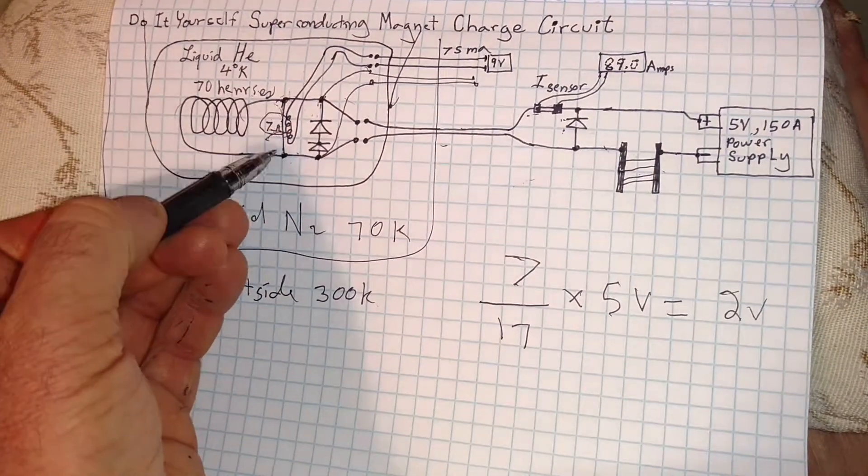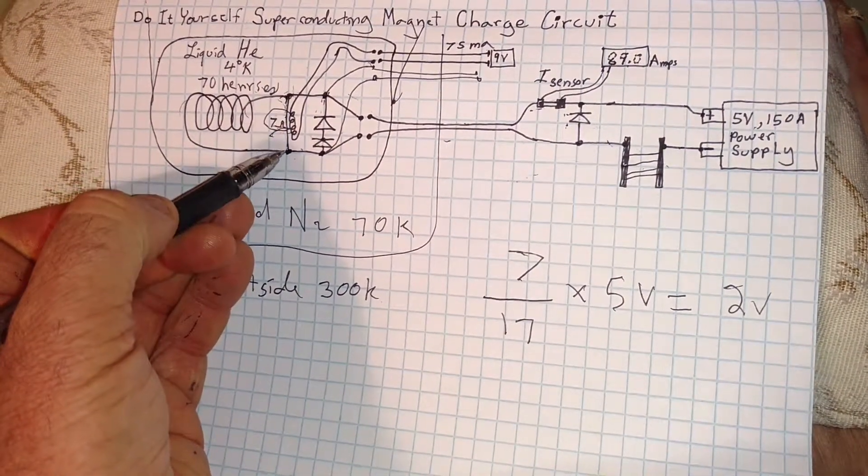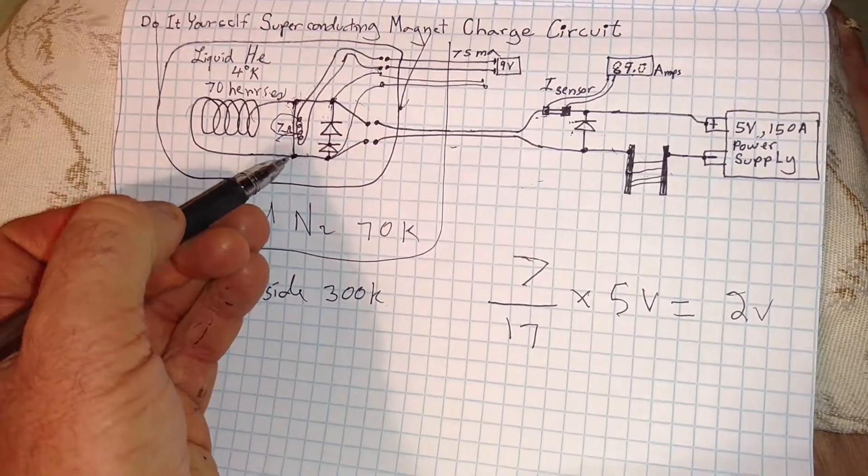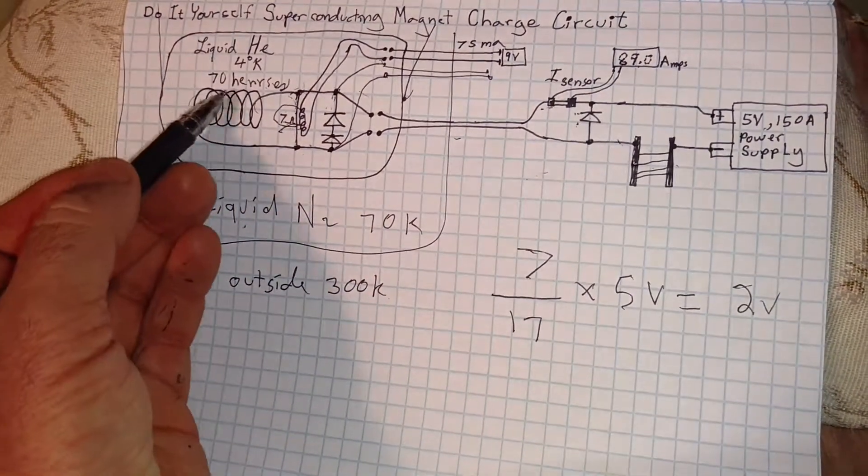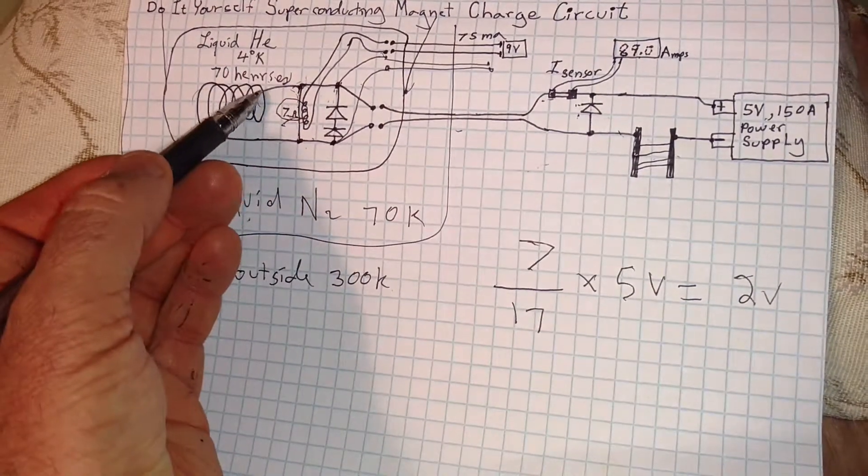So two volts across here, we lose some of the current through that 7 ohm resistor and some of the current is available to continue to go through the 70 henry coil.